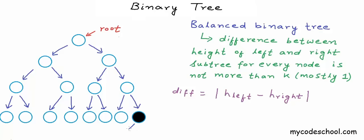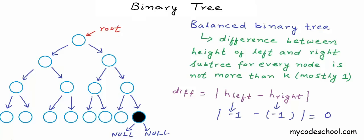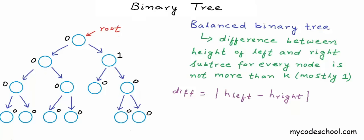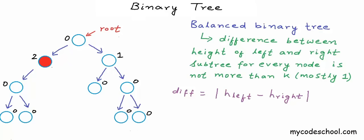The difference between heights of left and right subtrees of a node is the absolute value of (height of left subtree minus height of right subtree). For a leaf node, both left and right subtrees are empty, so both heights are -1, and the difference is 0. For all nodes in a perfect tree, the difference is 0. After removing some nodes, the tree is still balanced if the maximum difference for any node is 1. If a node has diff of 2, the tree is not balanced.